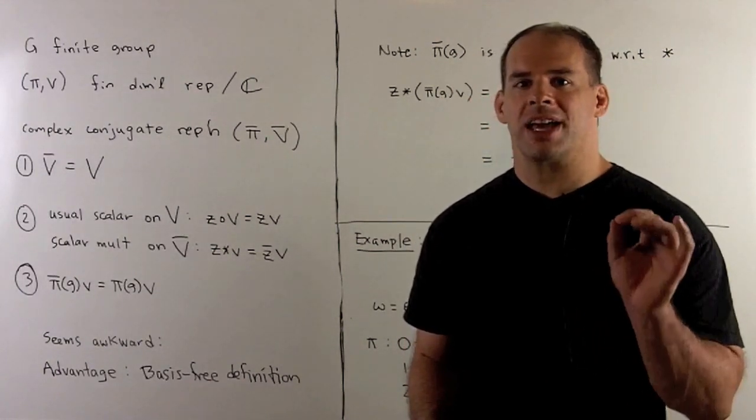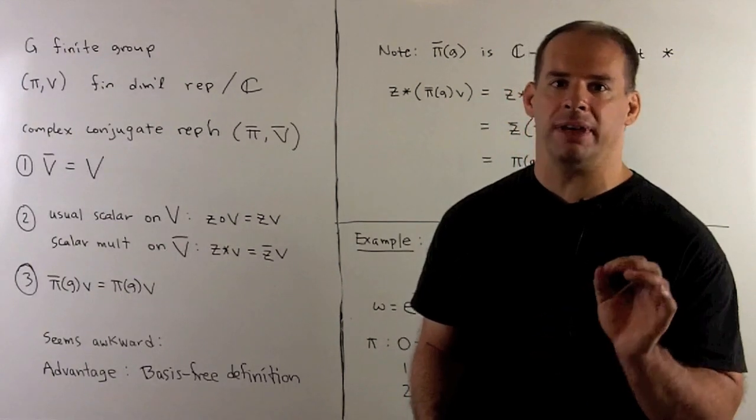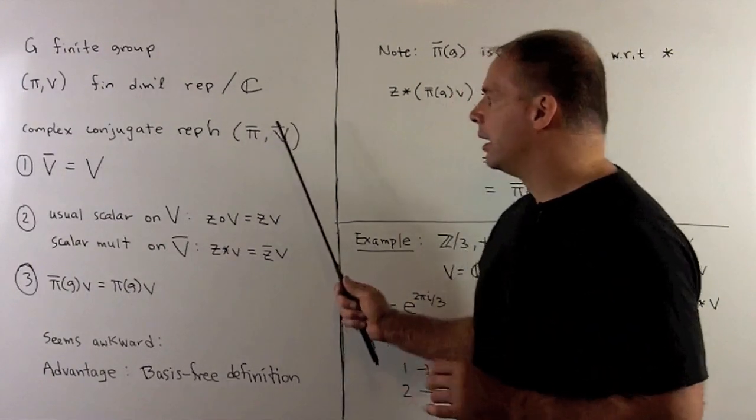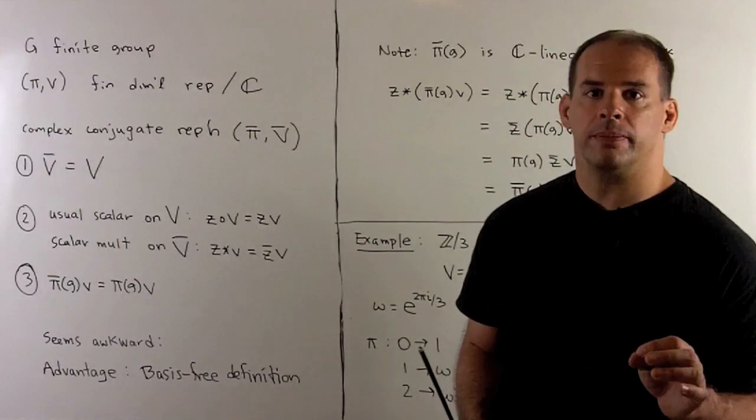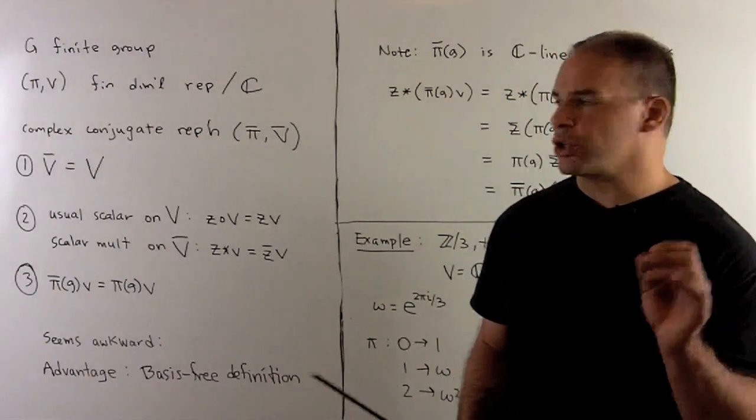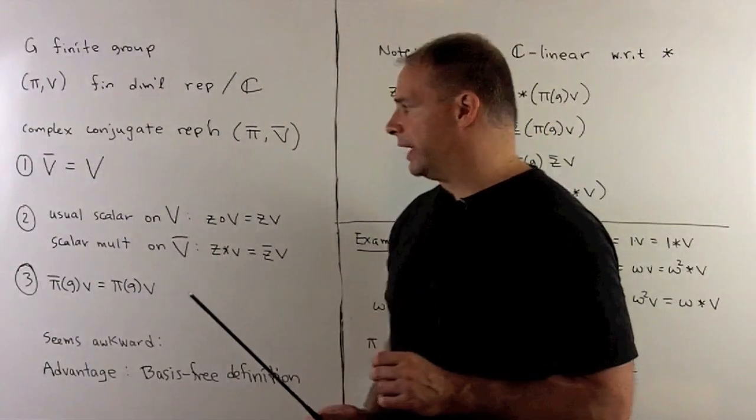To define a complex conjugate representation of pi V, we'll call that pi bar V bar, we need three ingredients. First, the vector space V bar is just the vector space V.